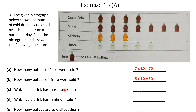Which cold drink has maximum sale? Pepsi — so Pepsi has the maximum sale. Which cold drink has the minimum sale? Mirinda, with 3 bottles shown, whereas Coca-Cola has 4. So Mirinda has the minimum sale. How many bottles are sold altogether? Count all bottles in the picture and multiply by 10. There are 19 bottles shown, so 19 into 10 equals 190 bottles sold in total.